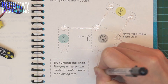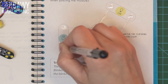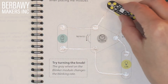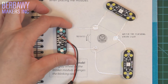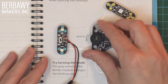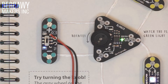On page 11 of our notebook we will build our circuit and populate it with our components. Taking a closer look at how our components are connected, we can see that our blinker module has some letters on it that we haven't seen before.